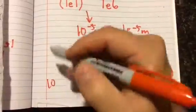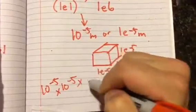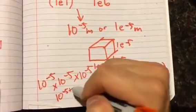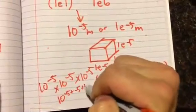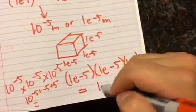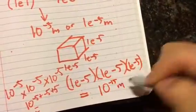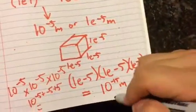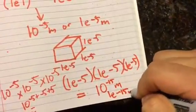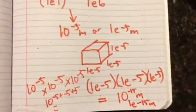Another way to write this is 10 to the -5 times 10 to the -5 times 10 to the -5. So then you'd have 10 to -5 plus -5 plus -5, which equals 10 to the -15 meters, or you could write it as 1e-15 meters. And that answer looks familiar, doesn't it? Because we got the exact same answer using the other method.